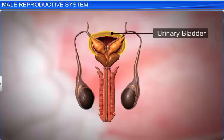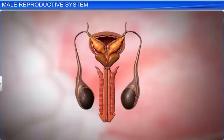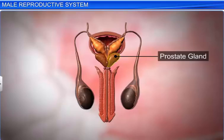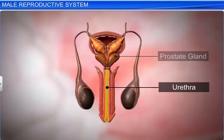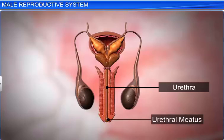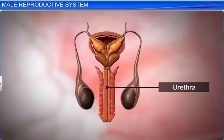The neck of the urinary bladder, ejaculatory duct, and prostate gland open into the urethra, or urinogenital canal. The urethra extends through the penis to its external opening, called the urethral meatus or urinogenital aperture. The urethra is the common passage for urine and semen.